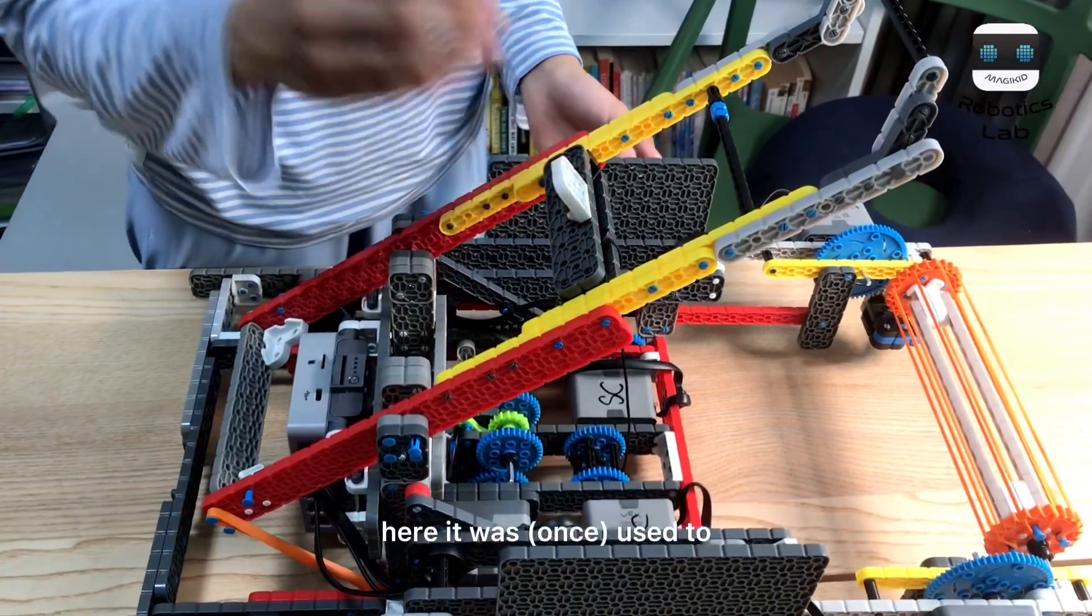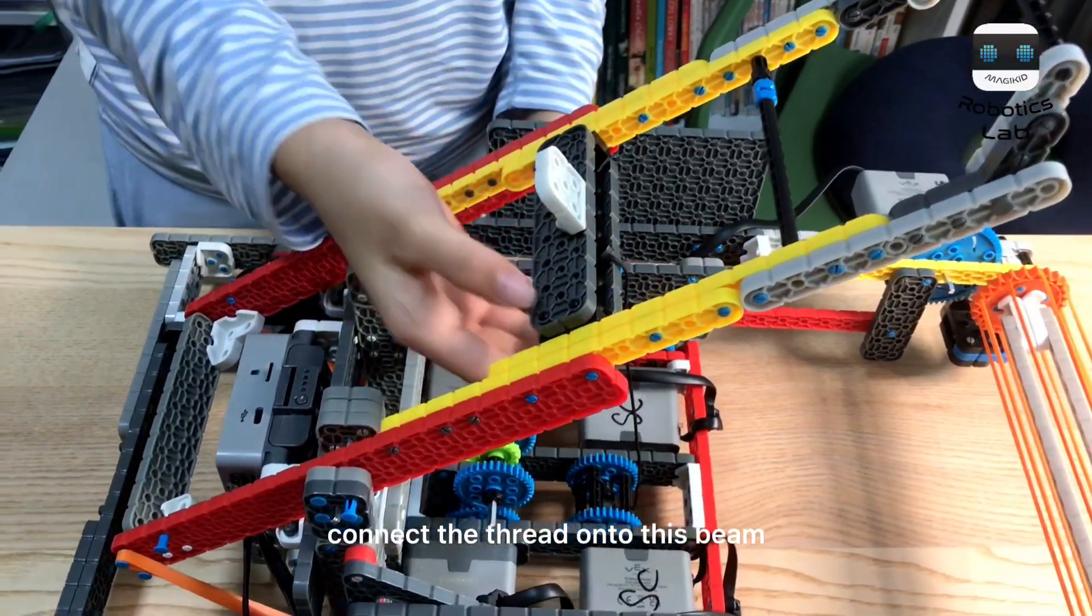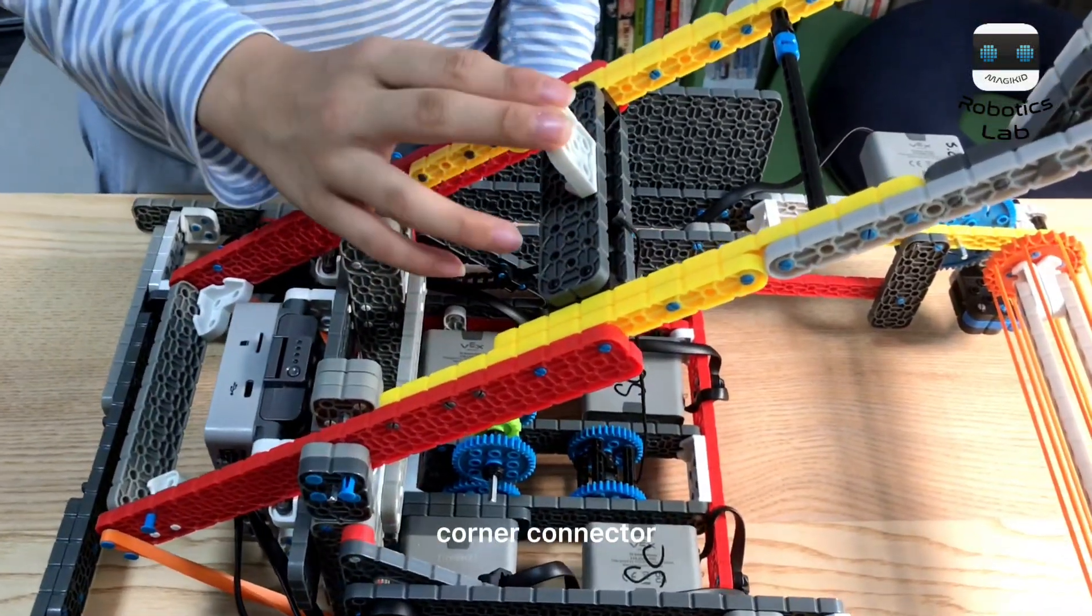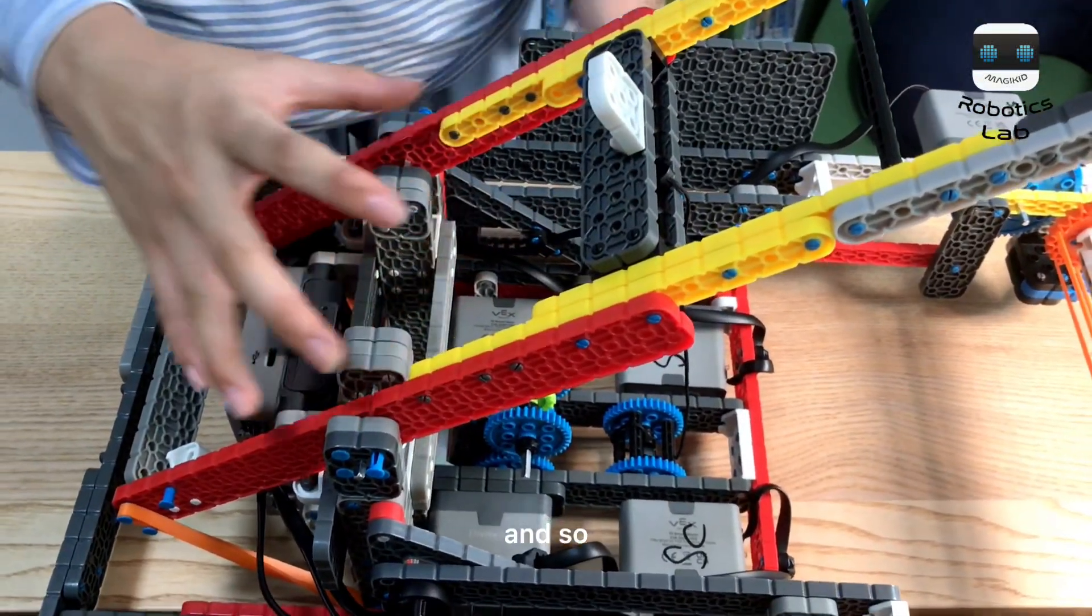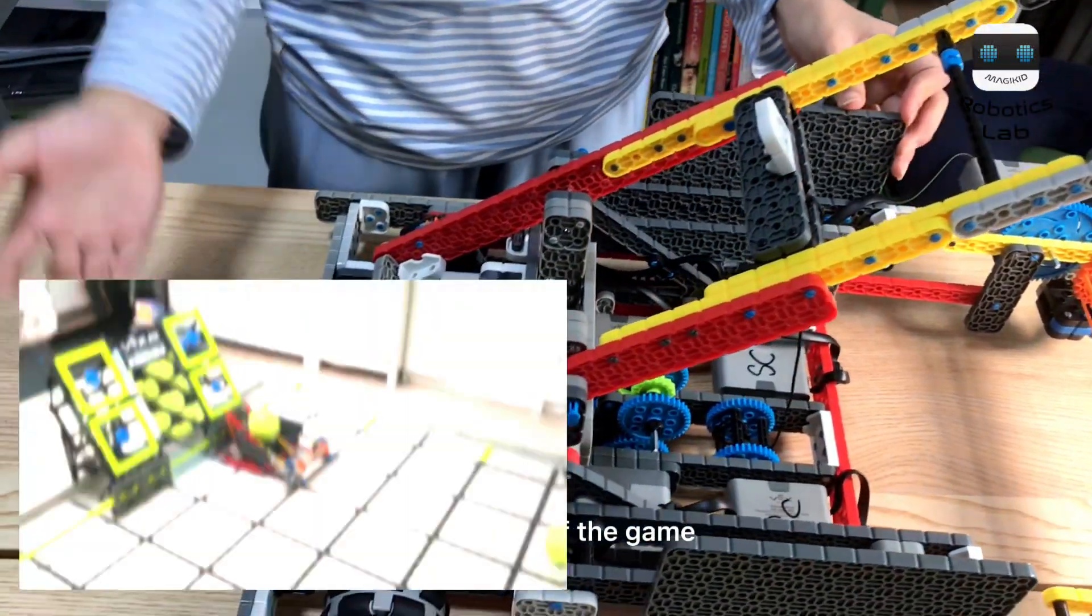Here, it was once used to connect the thread onto this beam, but now we change it into a corner connector, and so a ball can be placed here and thrown into the lower goal at the start of the game.